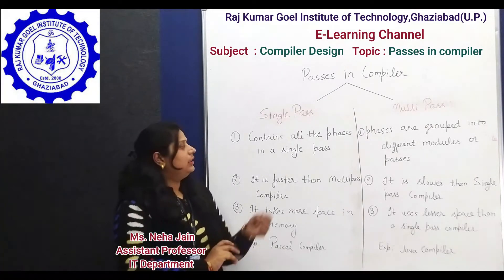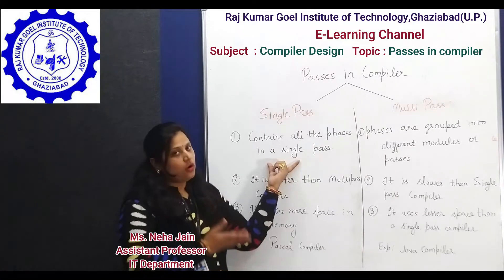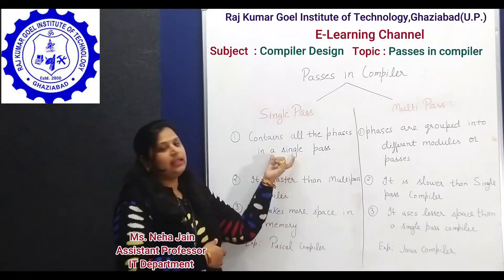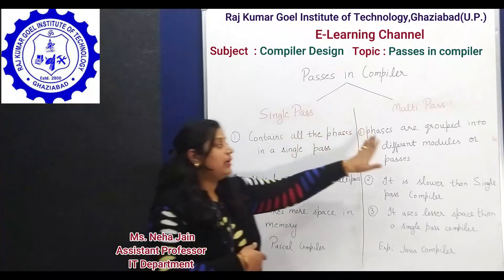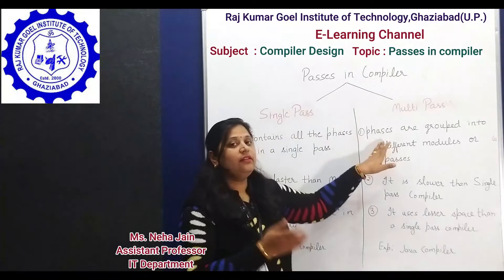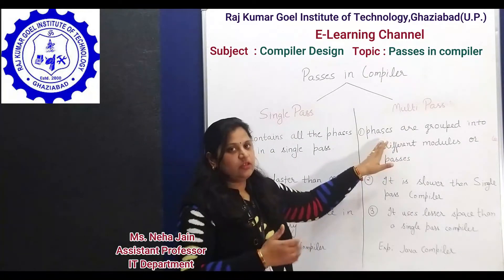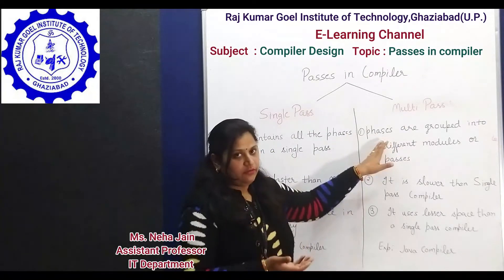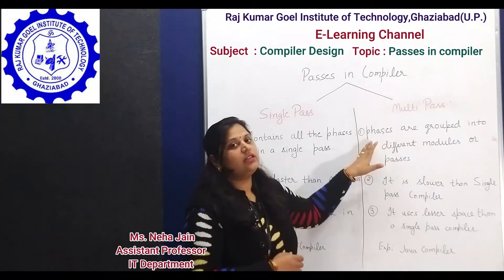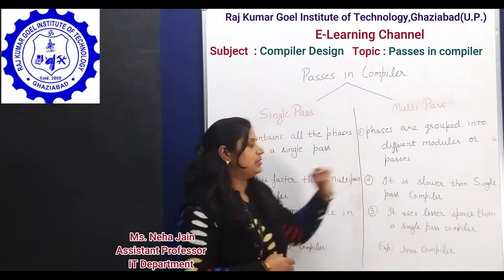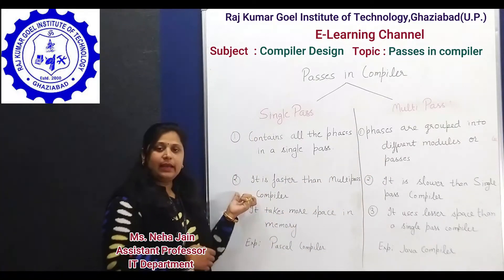The difference between single-pass and multi-pass compiler is: a single-pass compiler contains all the phases in a single pass, while in a multi-pass compiler we can group one phase or more than one phase into a module, which is called a pass.